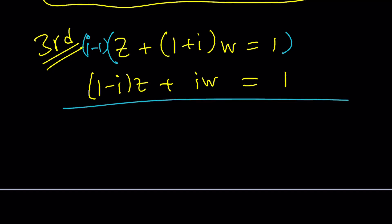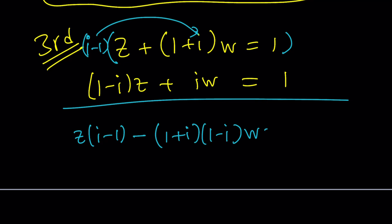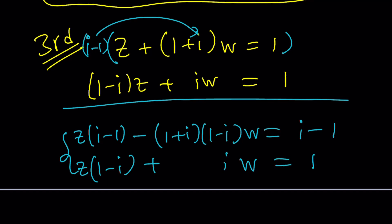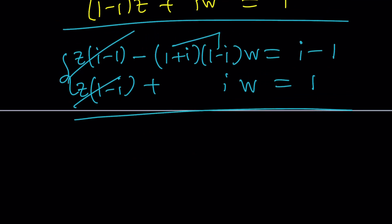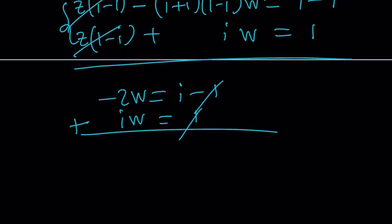Multiplying the first equation everywhere by I minus 1, we get Z times I minus 1 plus I minus 1 times 1 plus I times W equals I minus 1. I put a minus sign to write it as minus 1 plus I times 1 minus I, which gives 2 — so that term becomes minus 2W. The second equation has Z times 1 minus I. These two Z terms are opposites, so they cancel out, plus IW equals 1.